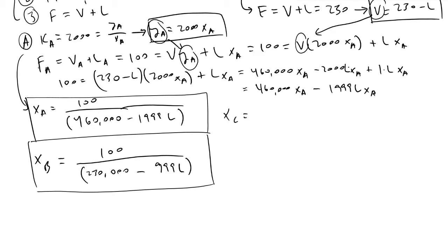x_c equals 20 divided by (2.3 - 0.99 times L), and x_d equals 10 divided by (1.15 - 0.995 times L).